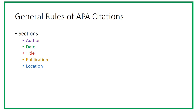All citations include several statements, and in APA these are separated with periods, just like most sentences. In APA, citations include an author statement, publication date, title statement, publication statement, and location statement. There are specific rules about how to format each statement.